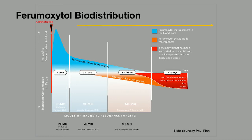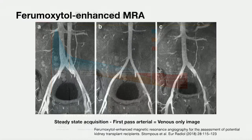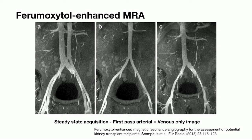Ferumoxytol is an iron-based ultra-small superparamagnetic iron oxide that stays in the blood pool for maybe 15 hours or so. We can inject a patient and image for as long as we want — send them away for lunch and bring them back. Our steady state image has the arteries and veins enhanced. Even with a relatively slow infusion you can get first-pass imaging, and if we subtract a first-pass arterial from the combined arterial and venous image, we get pure venous images — again very useful for surgeons.